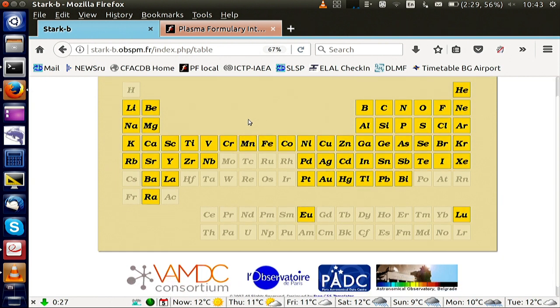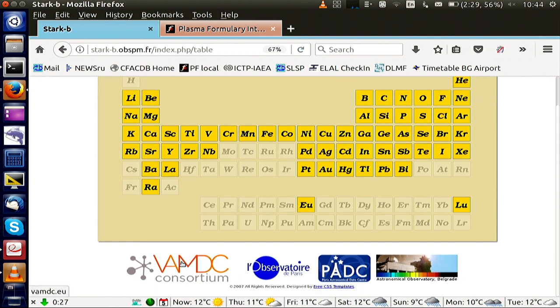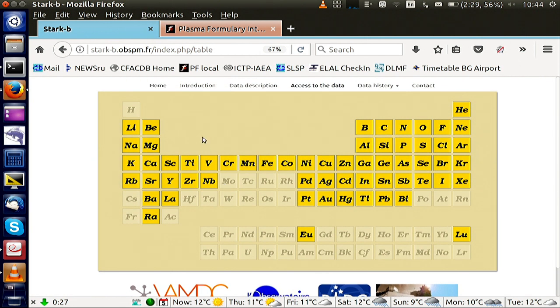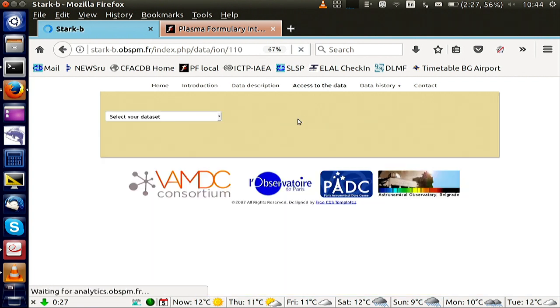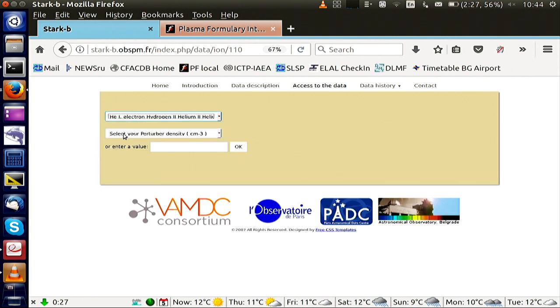By the way this is part of the virtual observatory project, European project. So for example, pick, I know, helium. Okay. In this case there is no ionized helium because ionized helium would be hydrogenic and hydrogenic lines are not isolated. That's why you do not see it here. So you go to, yeah, select, so in this case just one, pick your density.